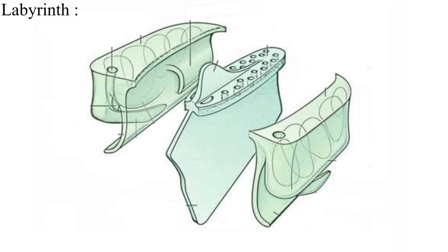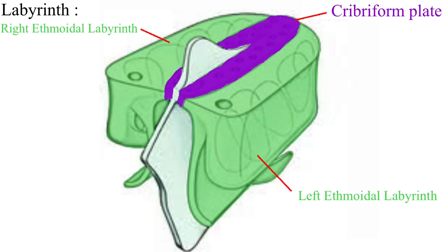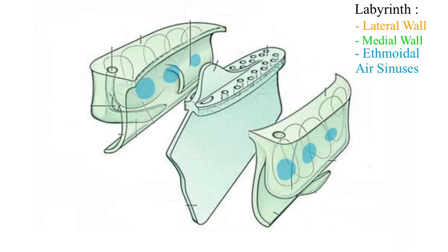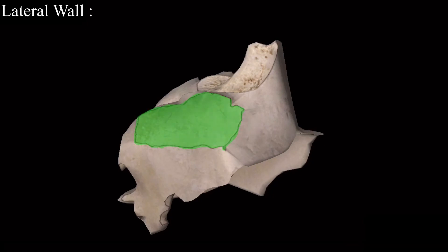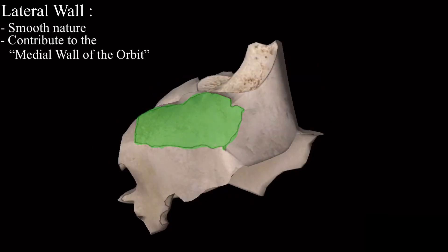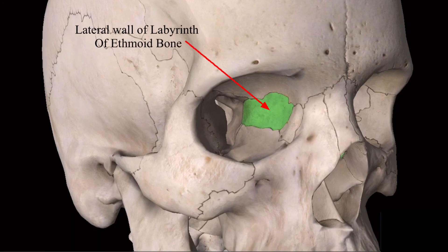Now we move to the labyrinth. There are two labyrinth — left and right — connected with each other through the cribriform plate of the median vertical plate. Here we will take one labyrinth as a representative. The labyrinth has the lateral wall, the medial wall, and in between the lateral and the medial wall are present the ethmoidal sinuses, also called the ethmoidal air cells. This is the lateral wall of the labyrinth of the ethmoid bone, which is smooth in nature and has contribution in making the medial wall of the orbit of the eye.